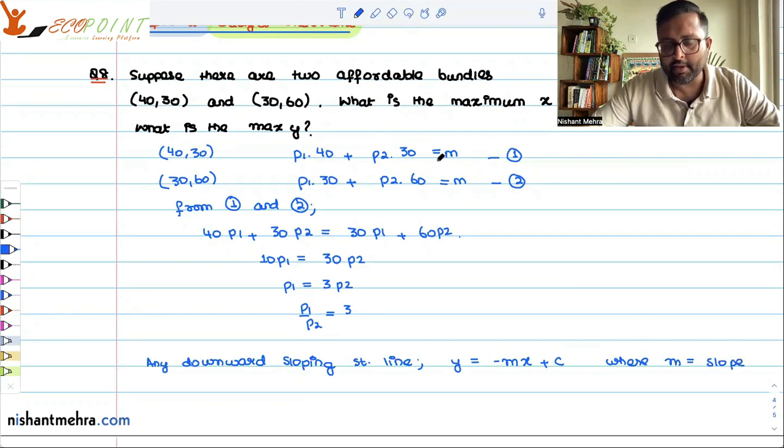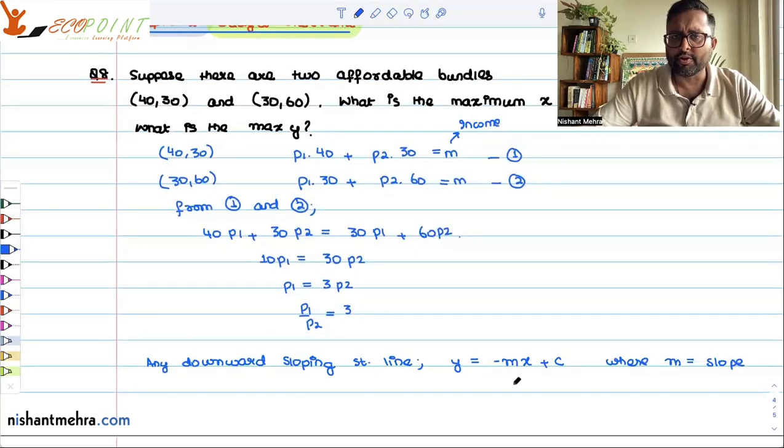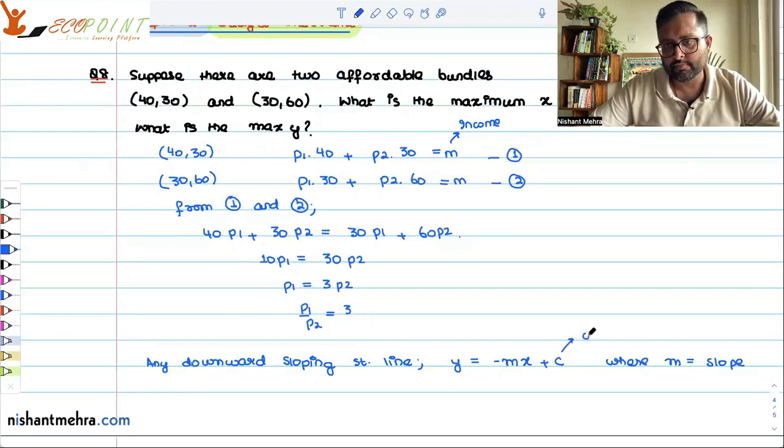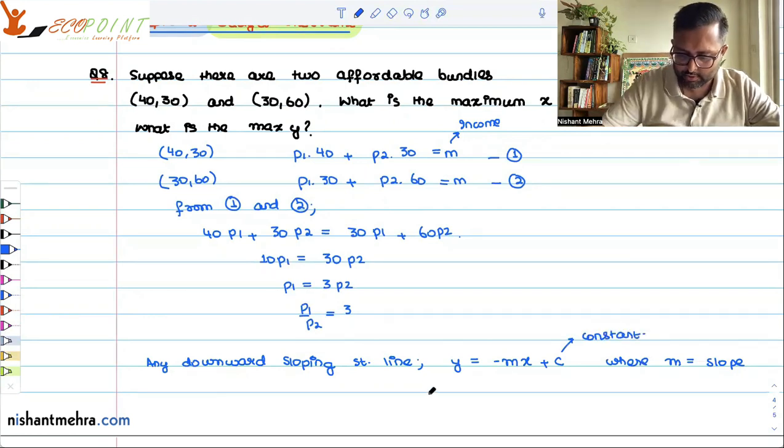When I have written m here, that m was income, so don't be confused. This you must have done in your coordinate geometry in 11th class. C is any constant.